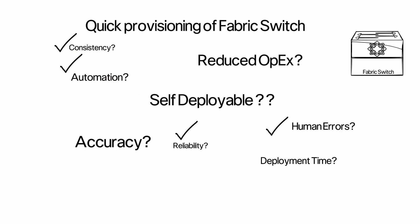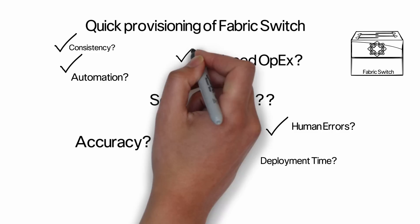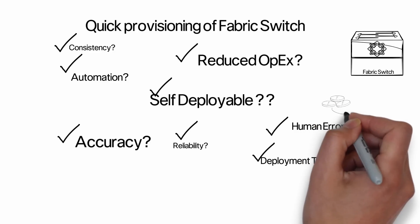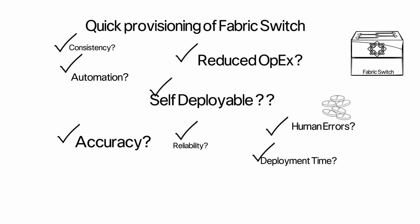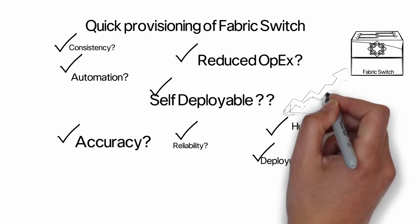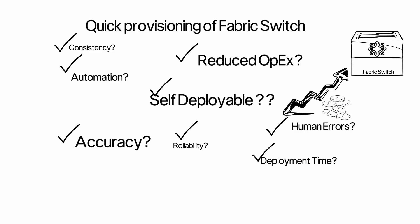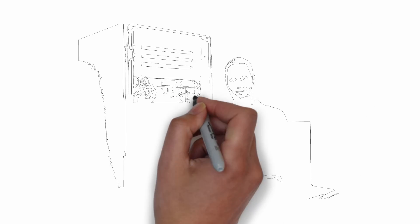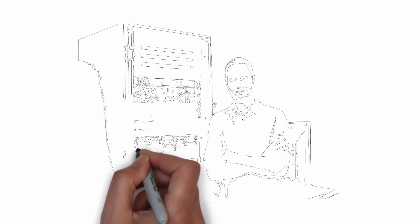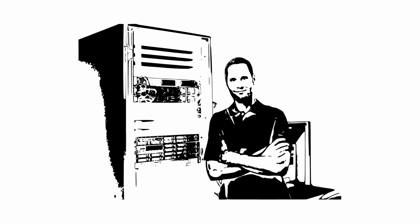The Power On Auto Provisioning feature on the MDS9148S enables you to push the new fabric switch into production within minutes of shipment. With the problems around opex, accuracy, and deployment time addressed in an efficient way, you achieve faster go-live and hence faster revenue generation. Deploying a fabric switch has never been this simple.